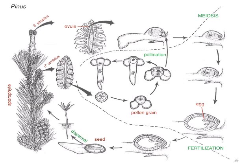So we'll start with a seed. That seed then disperses. It grows up to be the trees that we all know and love. They make female cones and male cones. On the female cones there are ovules. The male cones make pollen grains.